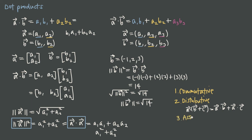The associative property also holds for the dot product. If we have a scalar — say 3 — multiplied by vector r, then dotted with vector s, written as (3r)·s, this equals 3 times the dot product of r with s: 3·(r·s). We're associating values differently by pulling out the scalar, rather than associating it with the first vector before dotting. All three properties — commutative, distributive, and associative — hold for the dot product.